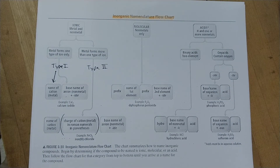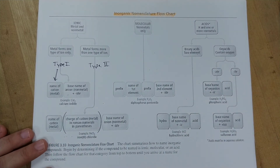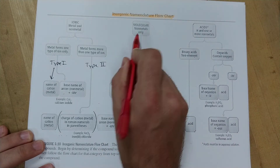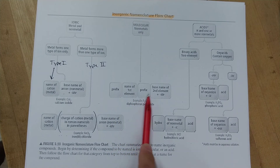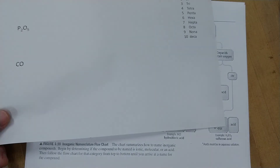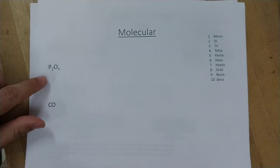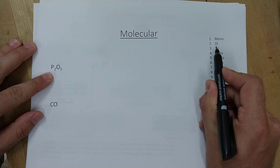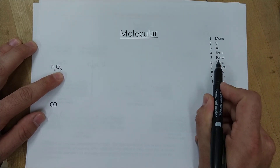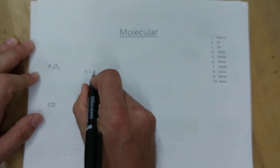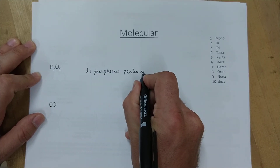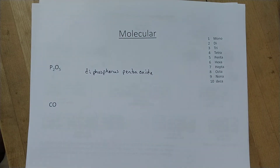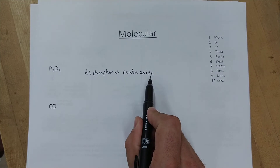Next are molecular compounds — made of non-metals only — and they're named just one way: add Greek prefixes to indicate how many of each element there are, then change the second element's ending to -ide. For example: two phosphorus atoms use the prefix 'di-' and five oxygen atoms use 'penta-', giving us dinitrogen pentoxide. That's all you have to do.